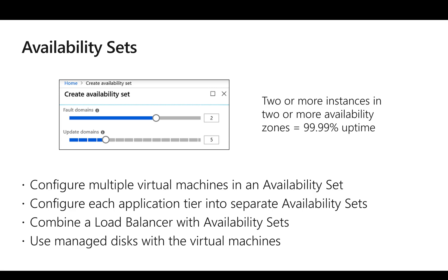The next important concept is availability sets. Availability sets are used to ensure high availability of applications. We might need to host a multi-tier application, and in each tier we might host multiple VMs to ensure high availability at each layer. We create an availability set and assign multiple VMs so that at least half of the VMs in that availability set will be working at any given moment.